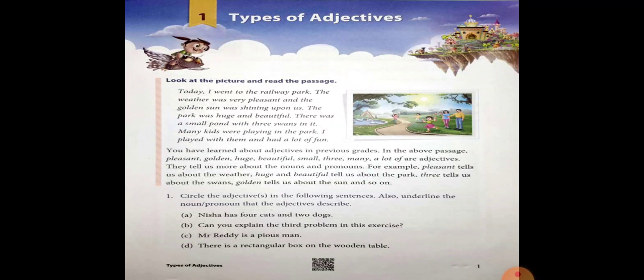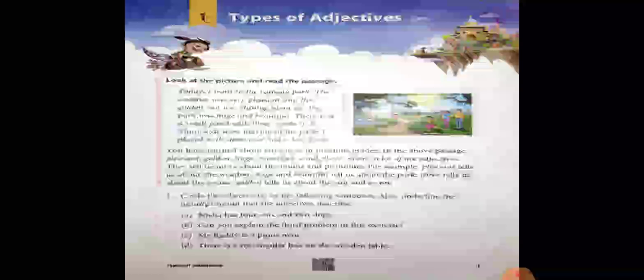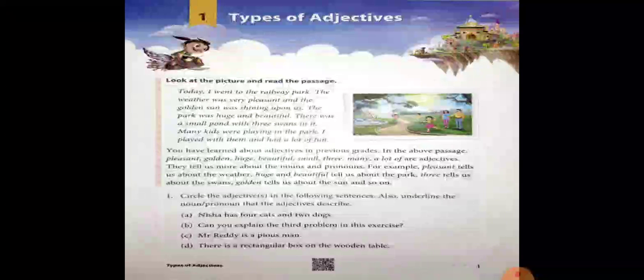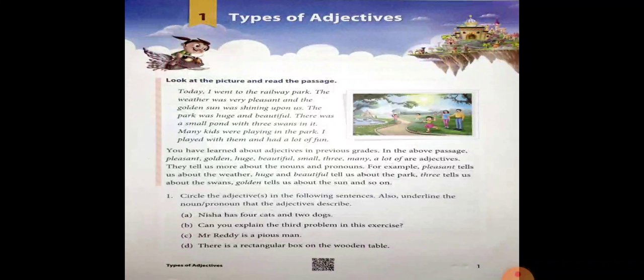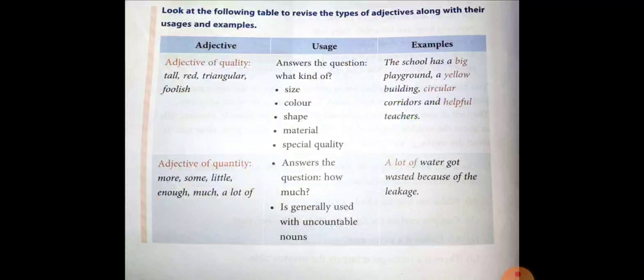For example, pleasant tells us about the weather — pleasant is used for the weather. Huge and beautiful tell us about the park; huge and beautiful are describing the park. Three tells us about the swans — three is telling the number of the swans. Golden tells us about the sun — golden is describing the sun. So there are different types of adjectives.